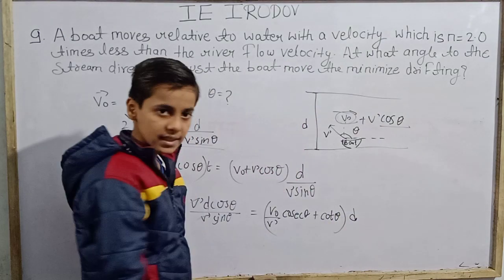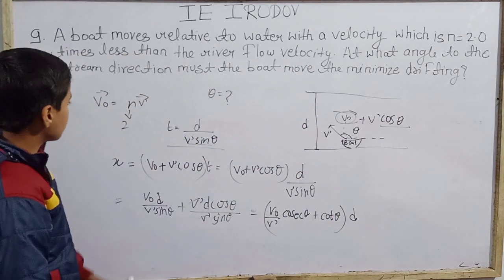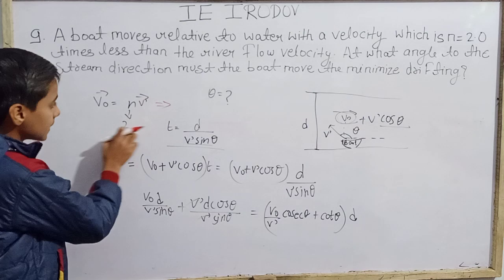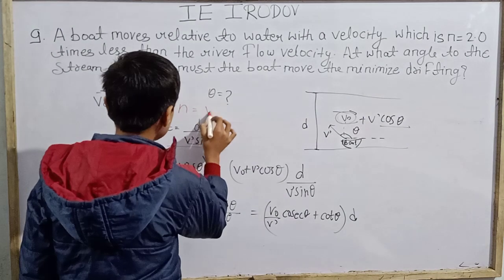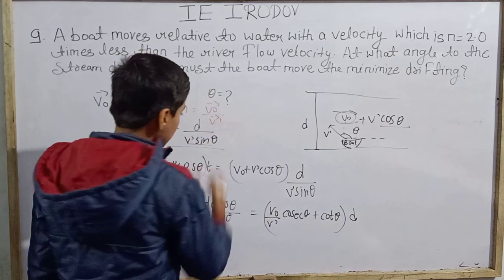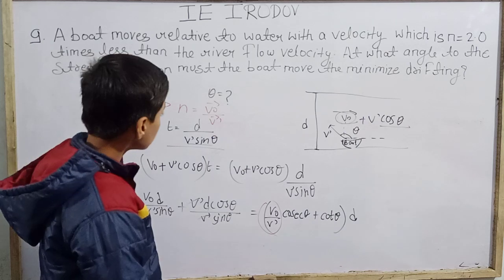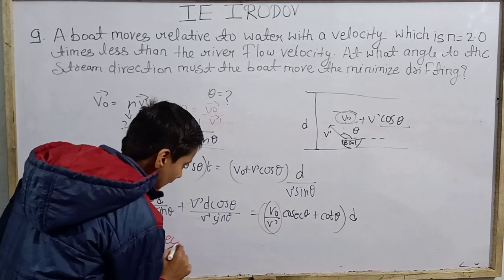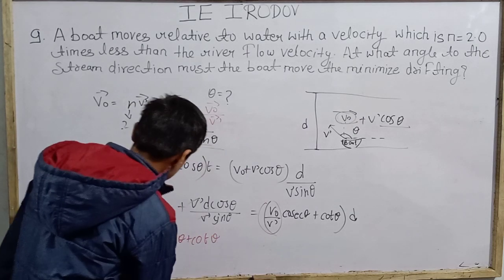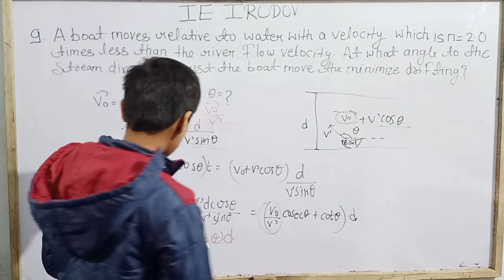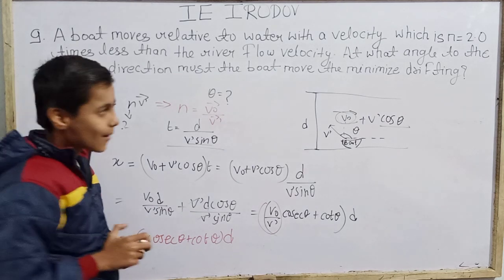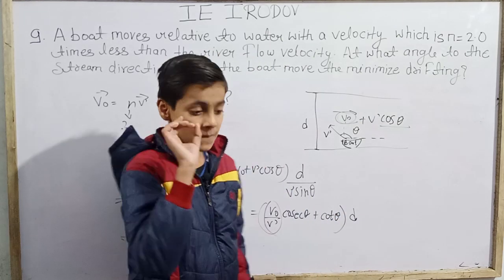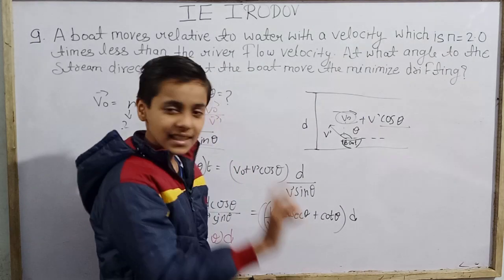Since V₀/V' equals n, we replace that ratio with n. So the drifting formula becomes D times (n cosec theta plus cot theta). Now, 80% of physics is mathematics. To find the minimum value of drifting, we use calculus: if we want the minimum or maximum value of a function, we differentiate with respect to the variable — here theta — and set the derivative equal to zero.